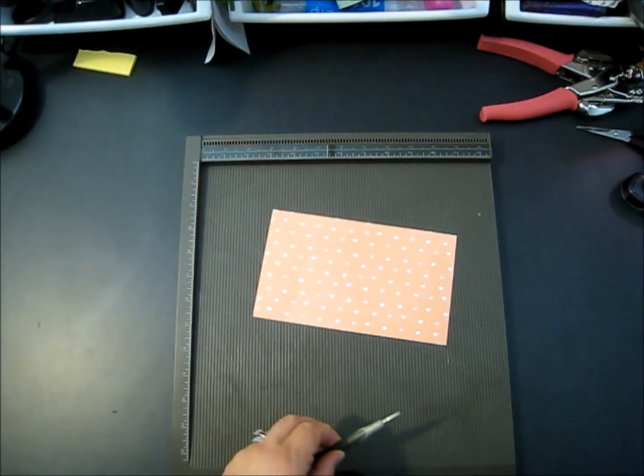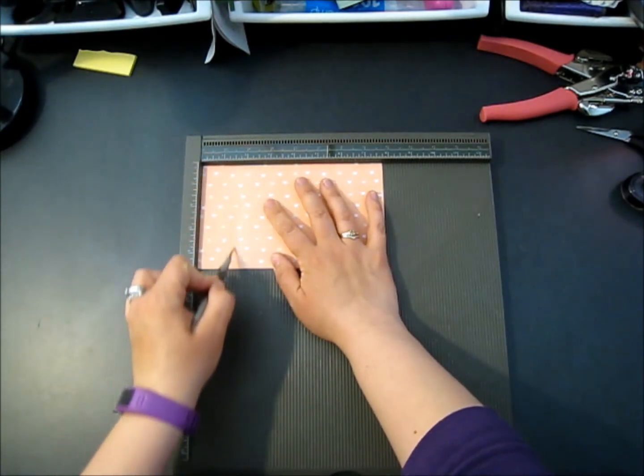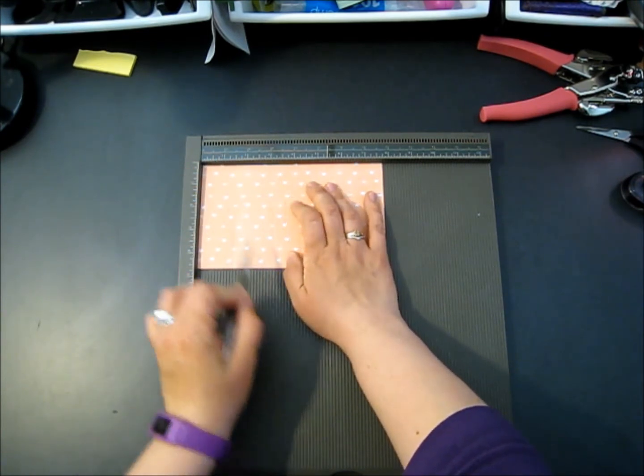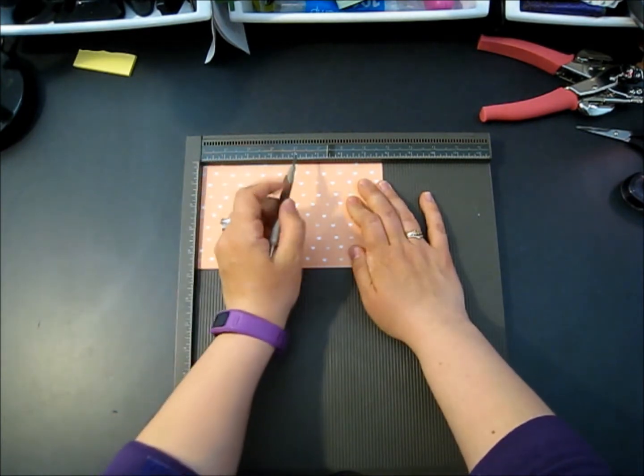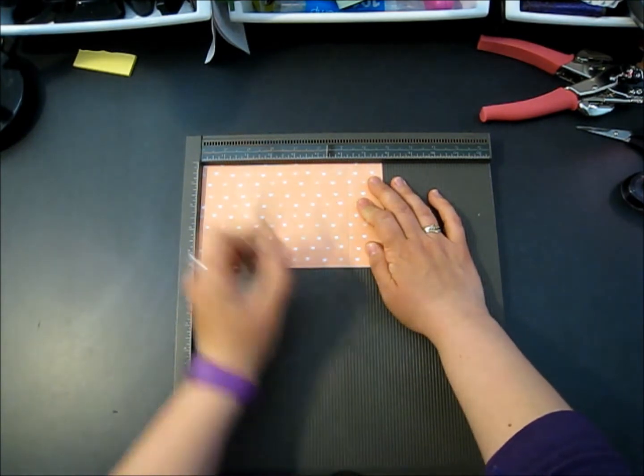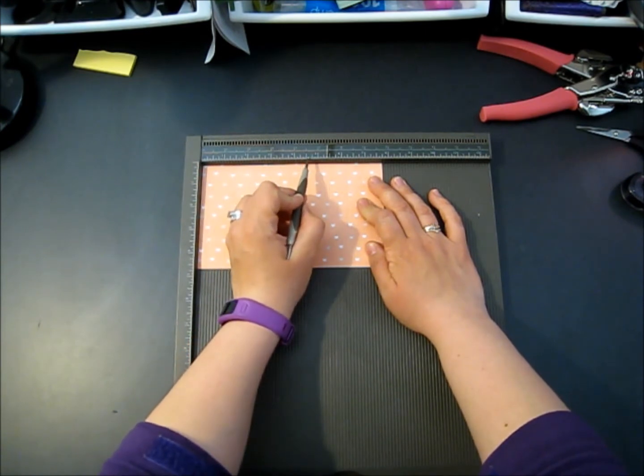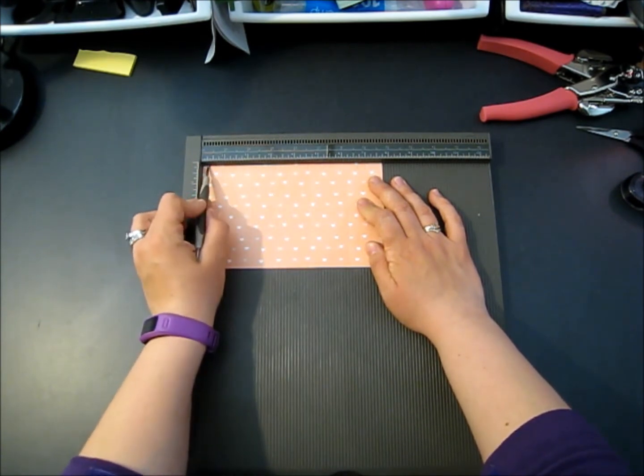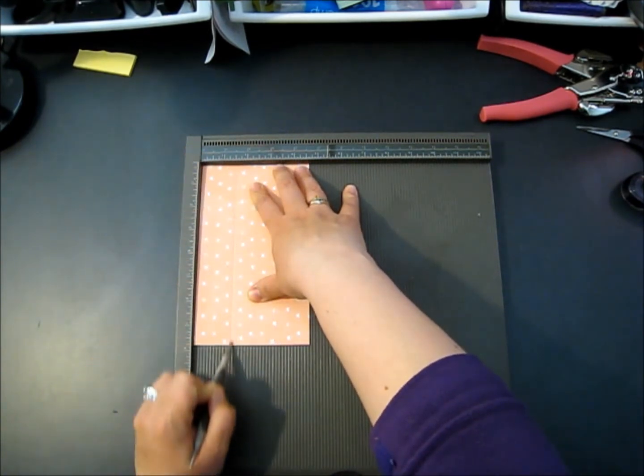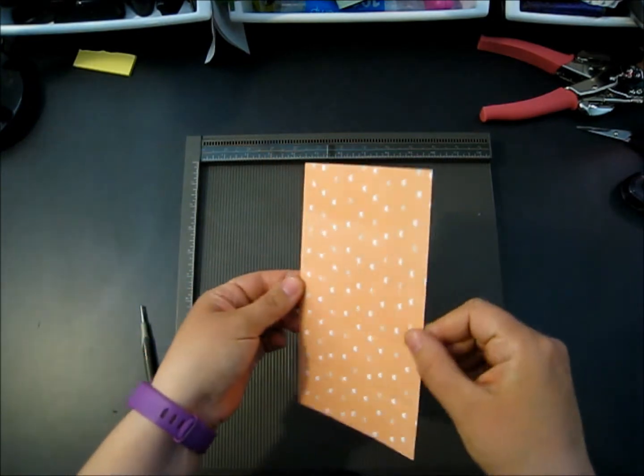We're going to do all kinds of scoring. First thing along the long side, we're going to score at 1 and 1/2, at 3 and 1/8, 4 and 5/8, and 6 and 1/4. They're all equal pieces on the long 7 and 3/4 inch side. You're going to flip that and score at 1 and 1/2 and at 3 and 1/8 again.